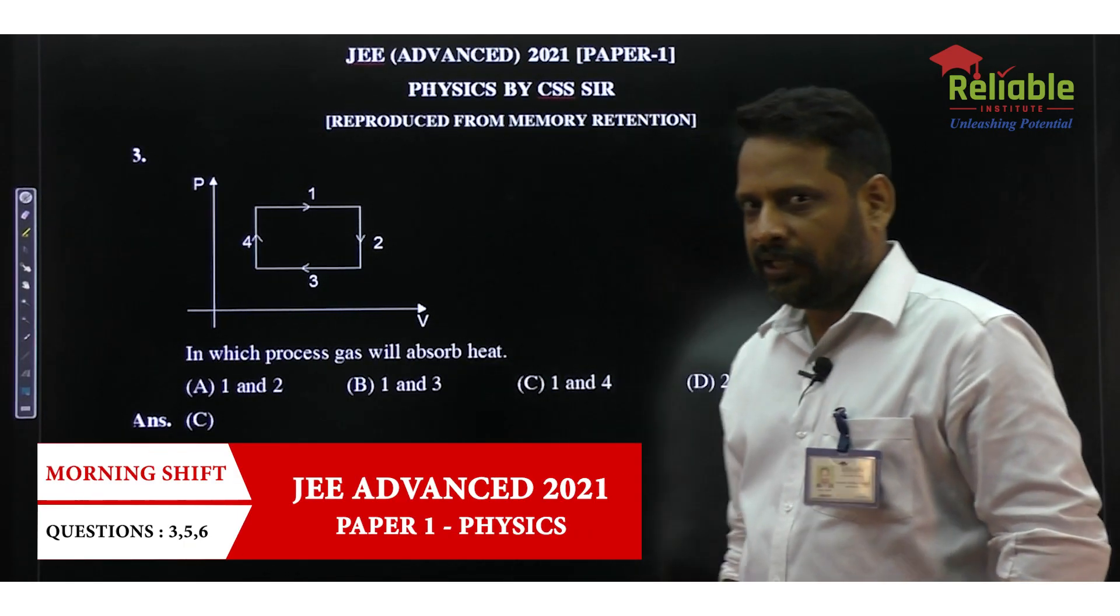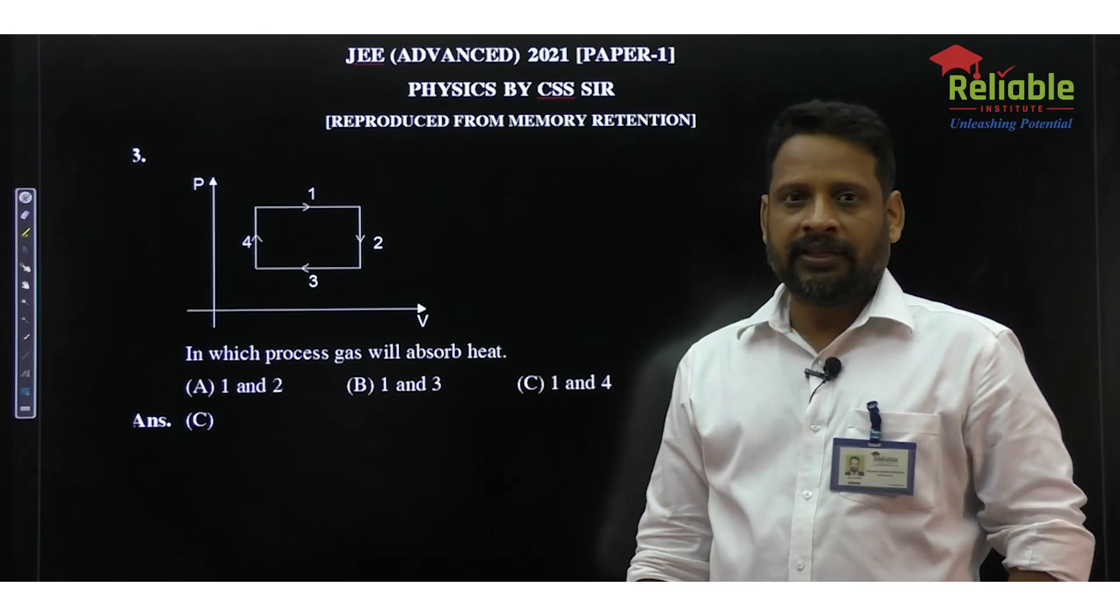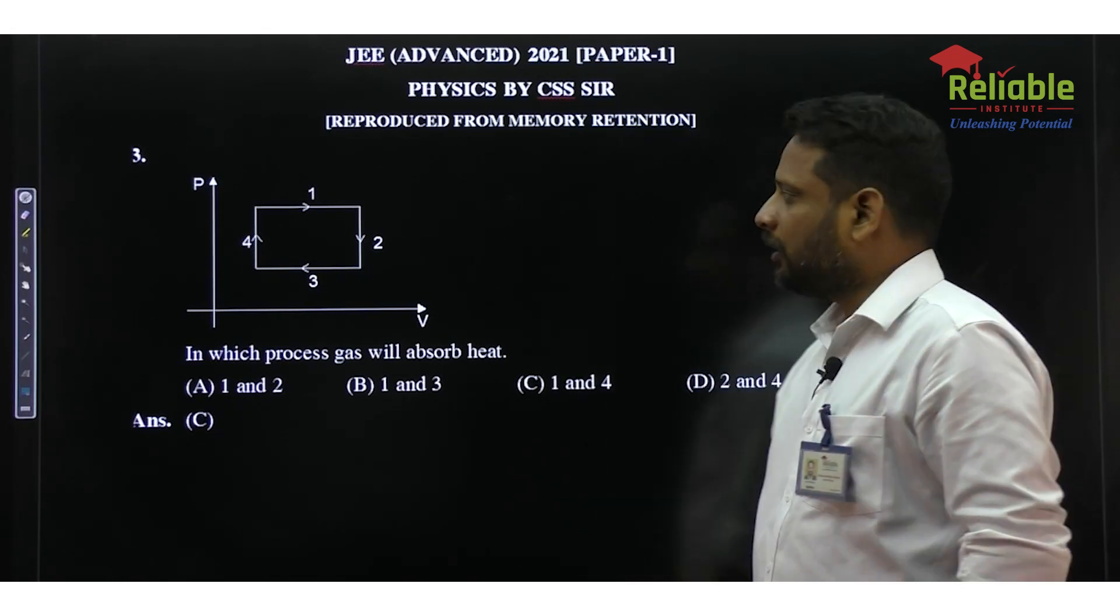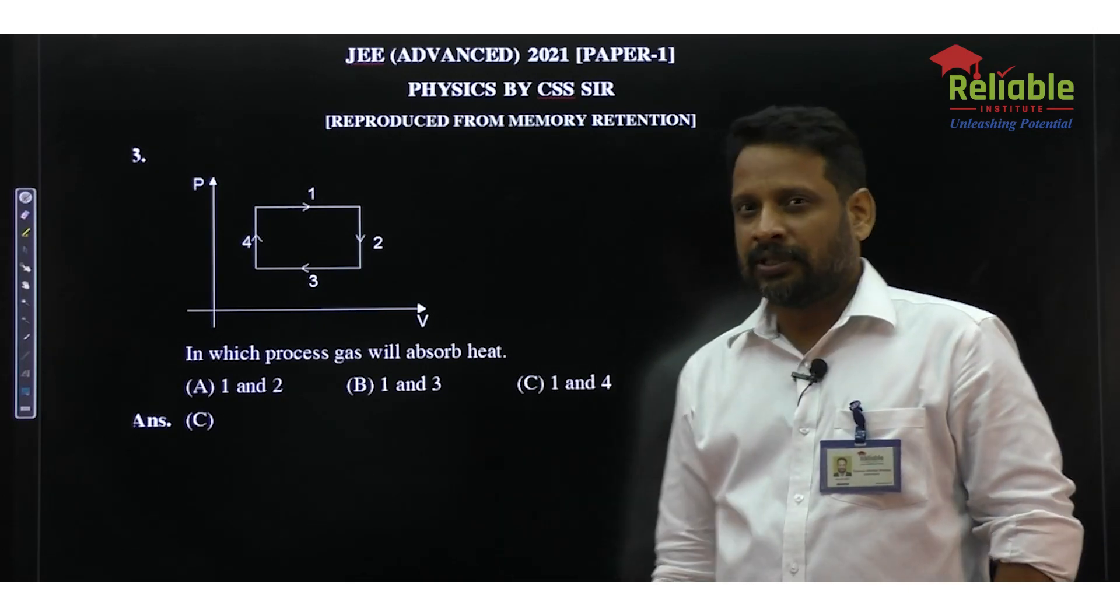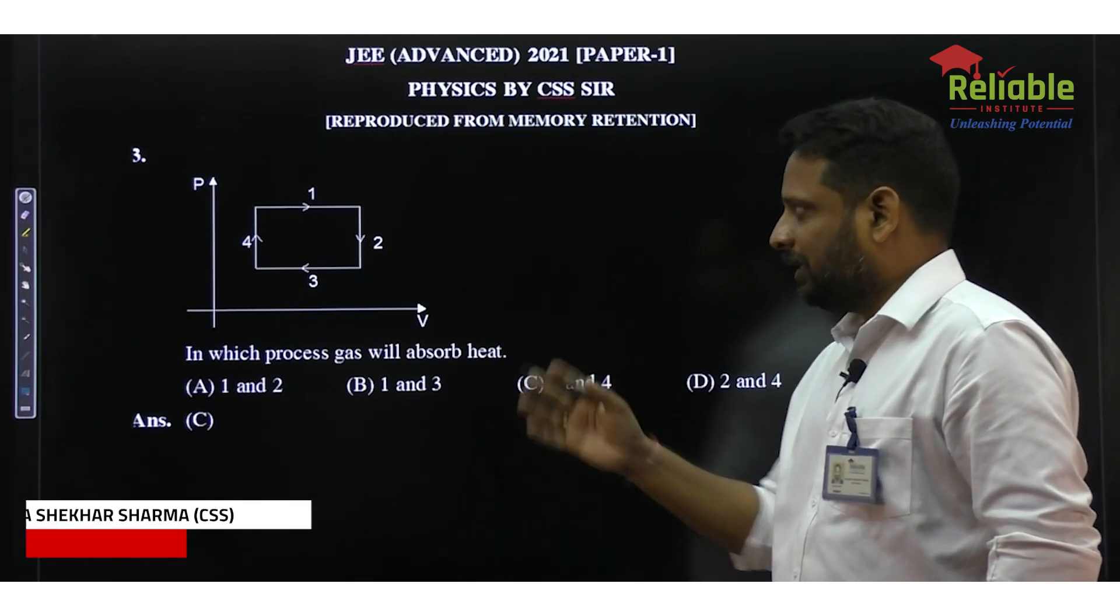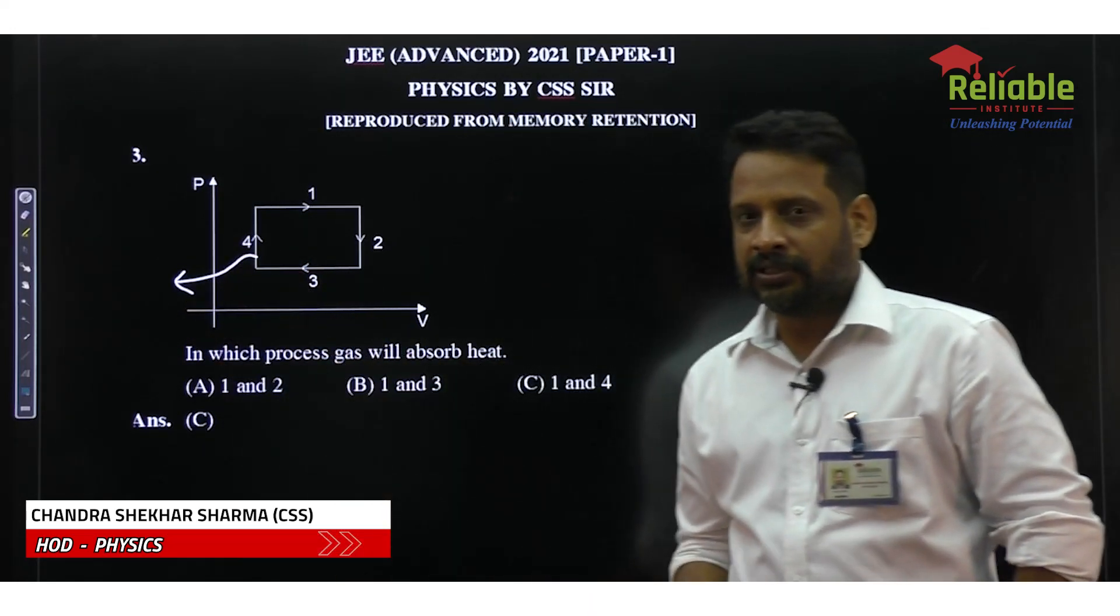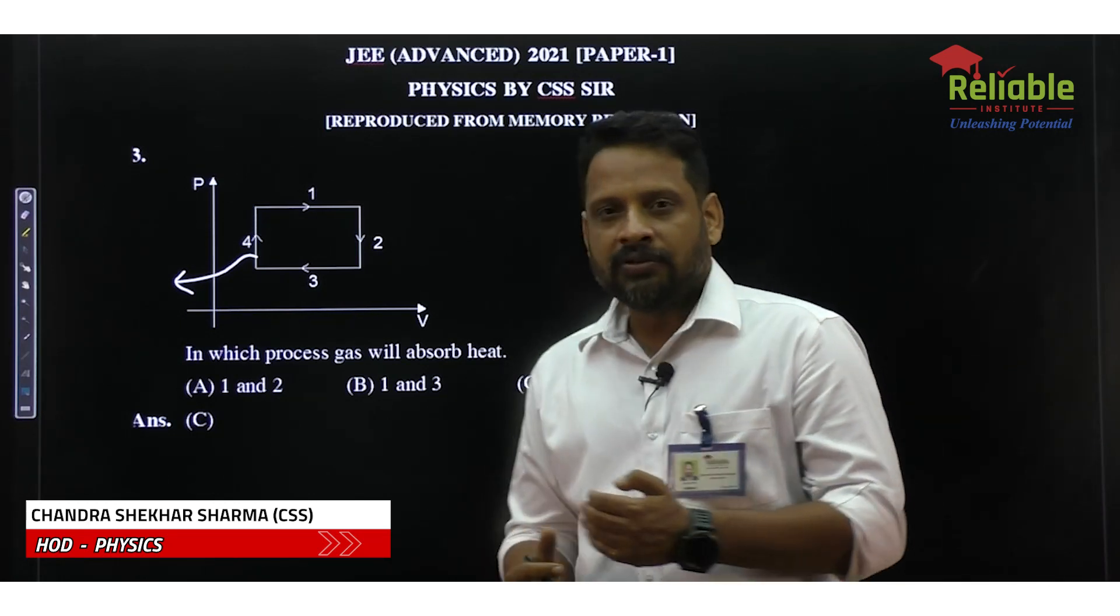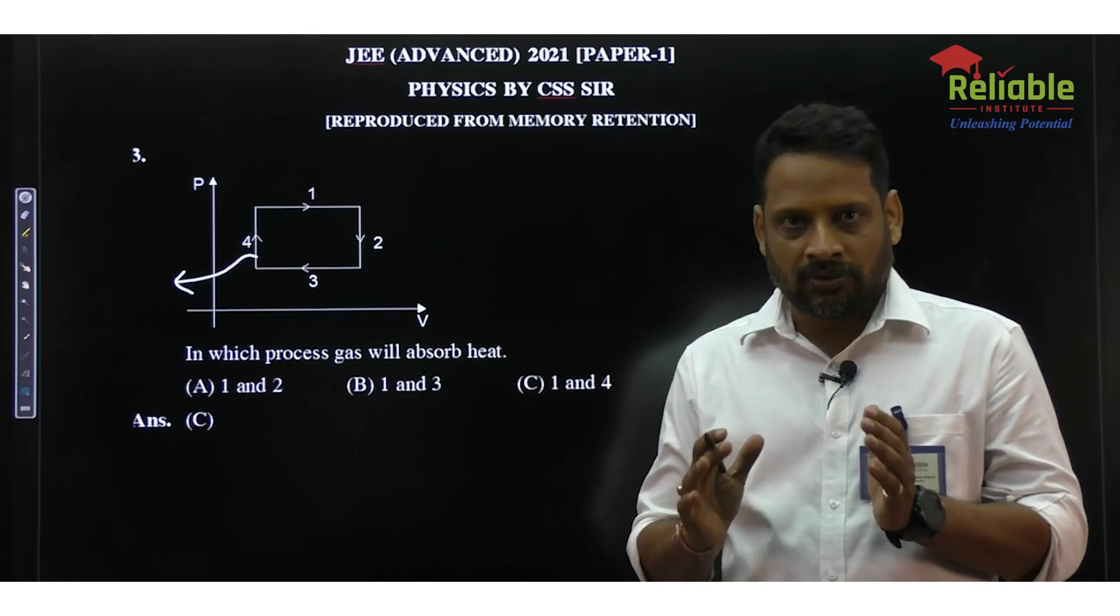Our next question is from heat and thermodynamics topic, and this question is again under easy category. Here you are given a cyclic process and you have to find out in which process gas absorbs heat. So clear-cut, process 4 is an isochoric process where volume is constant and pressure is increasing. When pressure is increasing, temperature is also increasing.